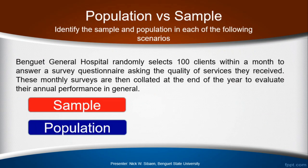Let me show you statements from which we will identify the sample and the population. First: Baguio General Hospital randomly selects 100 clients within a month to answer a survey questionnaire asking about the quality of services they received. These monthly surveys are then collated at the end of the year to evaluate their annual performance. What is the sample and what is the population?